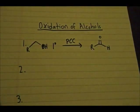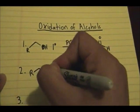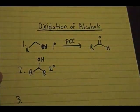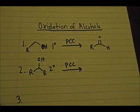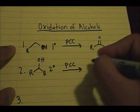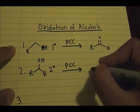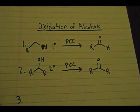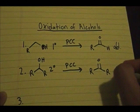The second case: if you have a secondary alcohol and you use PCC, you can oxidize the system to form a ketone. So this is an aldehyde from the primary alcohol, and this is a ketone from the secondary alcohol.